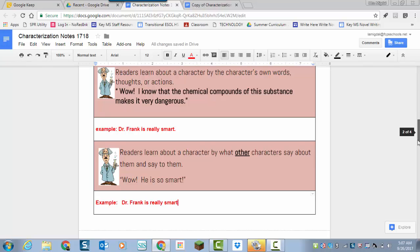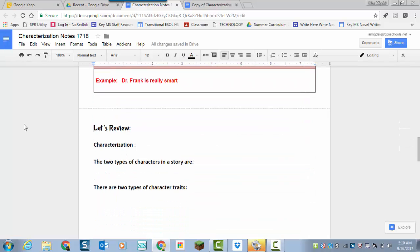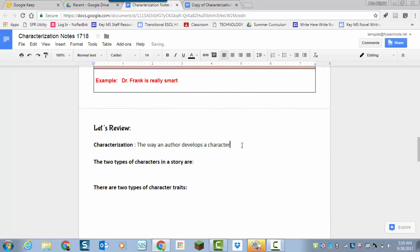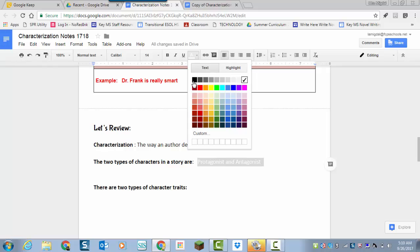So those are the ways that an author develops a character. Let's do a quick review. And you guys can do this too. I call this invisible ink. What's characterization? Do you remember? Characterization is a term that means the way an author develops a character. There are two types of characters in any story. Do you remember what they're called? The protagonist and the antagonist.